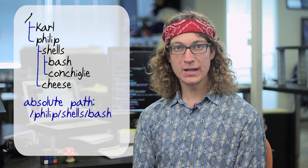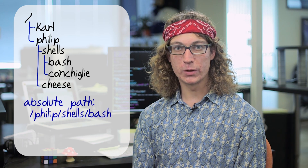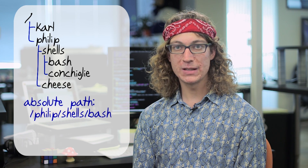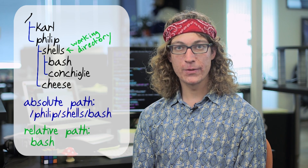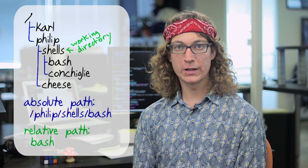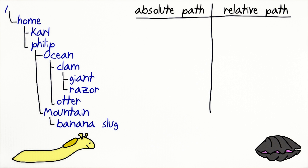Absolute paths are unambiguous and easy to understand, but they can also be inconvenient to work with, especially if you're working with deeply nested directories. To make things simpler, we can use relative paths instead. A file's relative path is its location relative to the current working directory. If you're working with files in or near the current working directory, this can save you a lot of typing. Every time you've referred to a file by just its name, you've actually been using a relative path. This is the simplest sort of relative path.